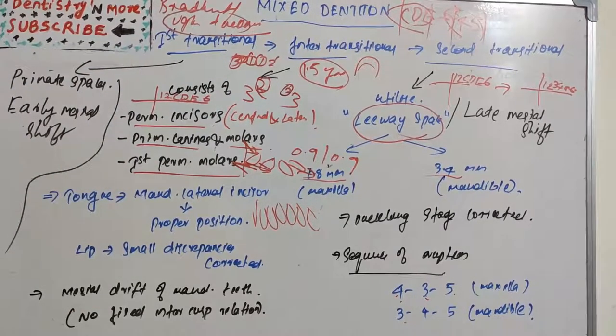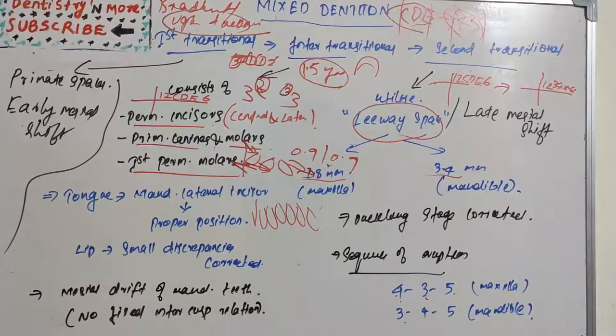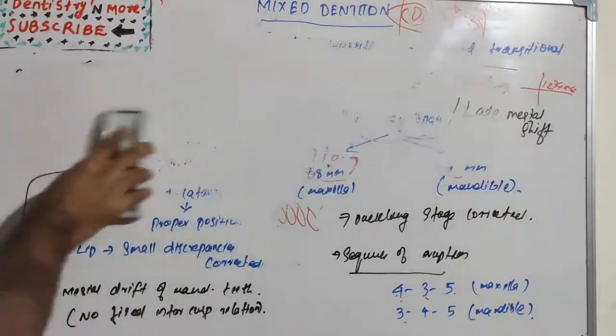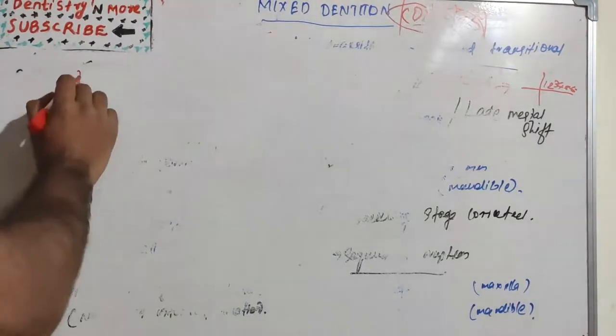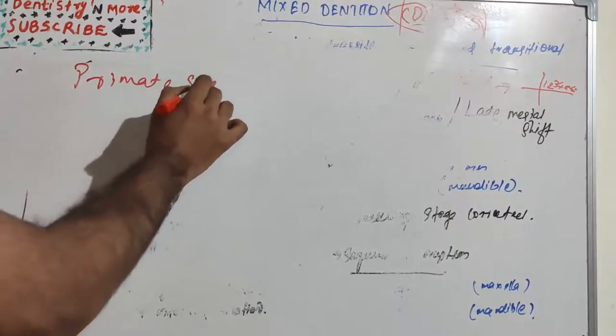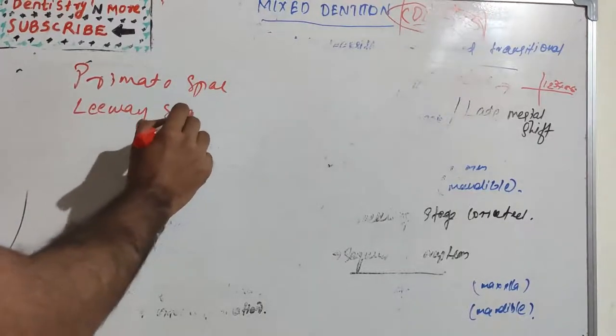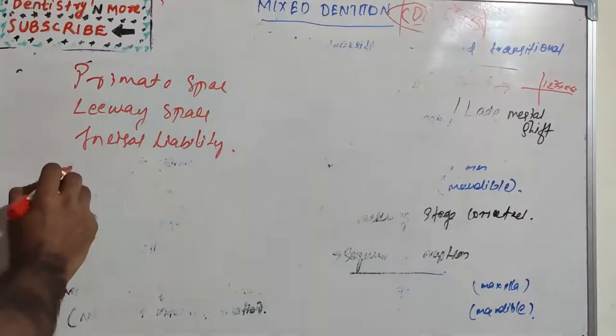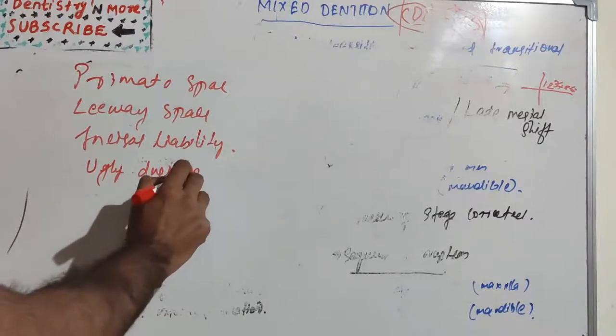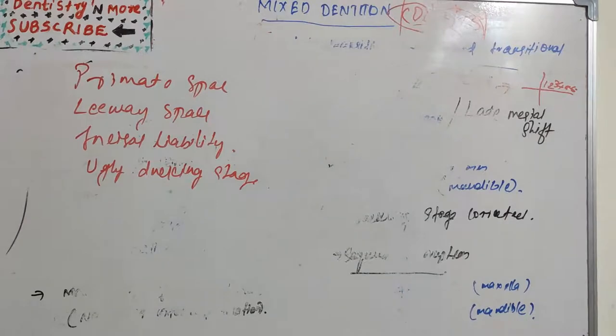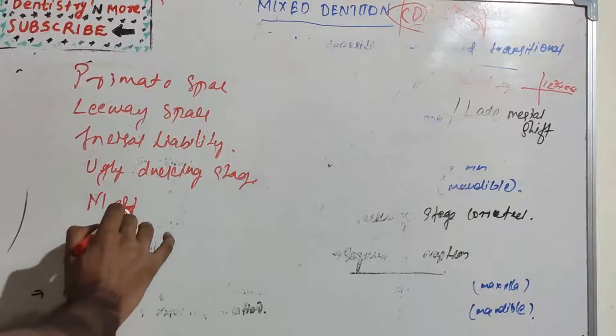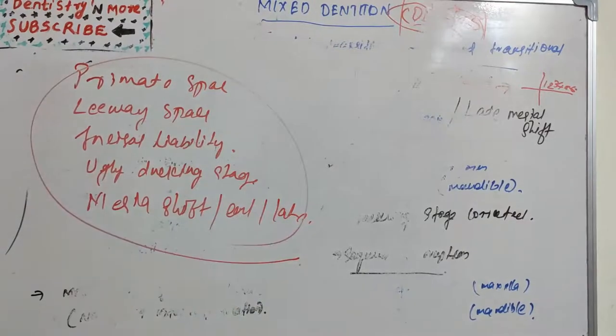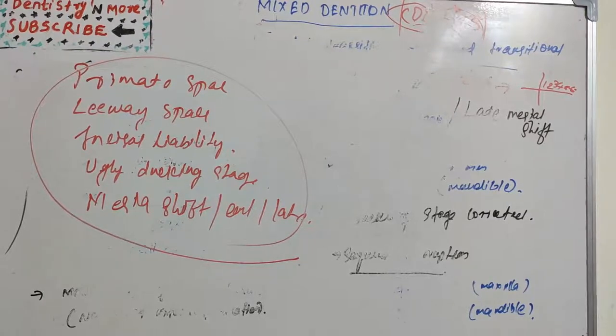That was about the second transitional phase. By the second transitional phase, all the deciduous teeth are exfoliated and now we have only permanent teeth. These three phases are very important from an exam point of view because you can expect a lot of questions. The common questions are primate space, leeway space, incisal liability, ugly duckling stage - also known as Broadbent phenomenon - and mesial shift - early mesial shift and late mesial shift. All these are short notes, and this mixed dentition period could be asked as a short essay also.